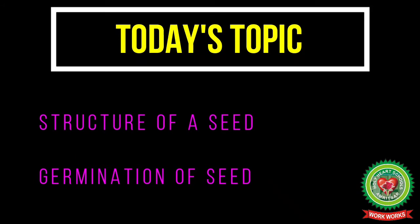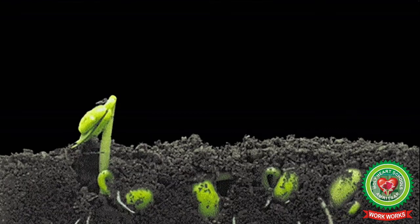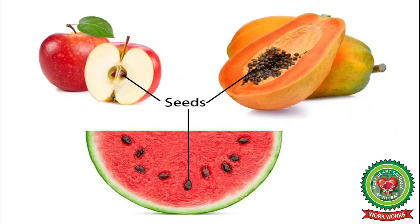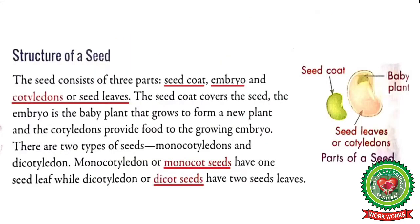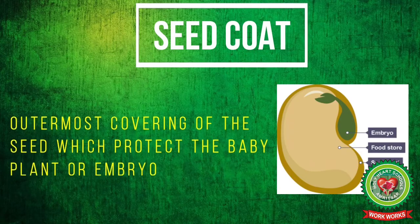Kindly open your book at page 58: Structure of a Seed. Students, a seed is the part of the plant which gives rise to a new plant. Seeds are found inside the fruit. Seeds consist of three parts: seed coat, embryo, and cotyledon or seed leaves.